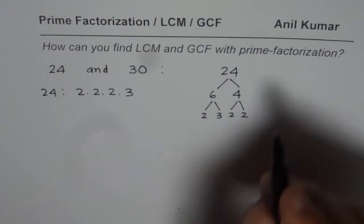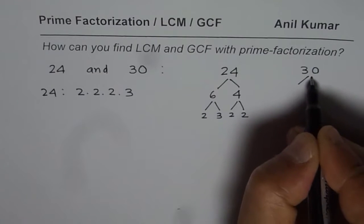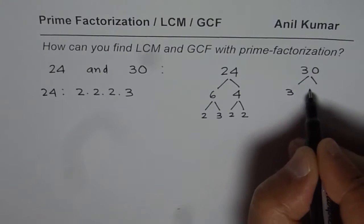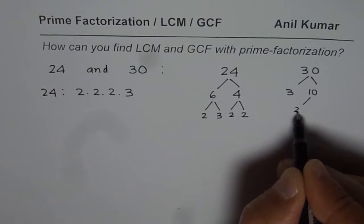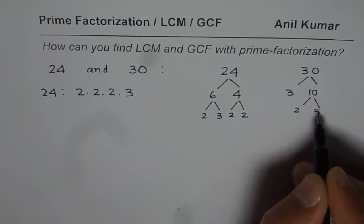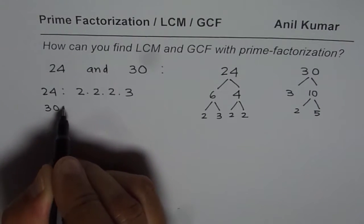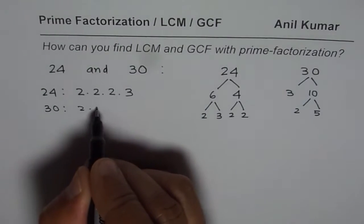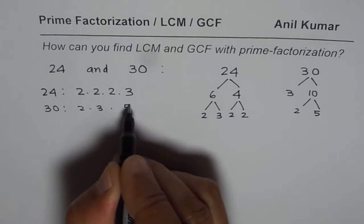Now let us do prime factorization for 30 also. It could be written as 3 times 10, and 10 is 2 times 5. So for 30, prime factorization is 2 times 3 times 5.